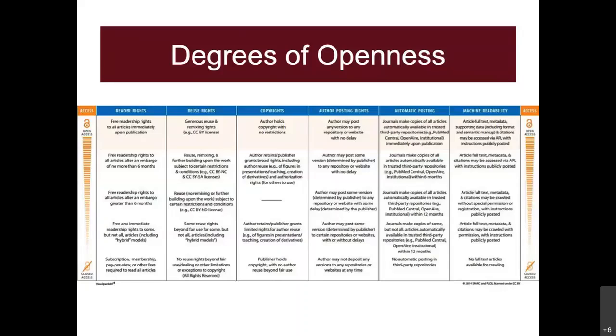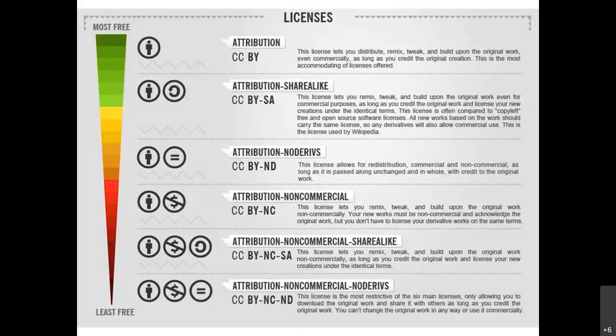This chart comes from the Public Library of Science (PLOS), a major publisher in the open access world. To simplify things, when it comes to open access you'll typically find Creative Commons licenses. The most free license is CC BY — attribution — which means when you reuse something, all you have to do is attribute the source. You can distribute it, remix it, tweak it, and change it, as long as you give proper attribution.